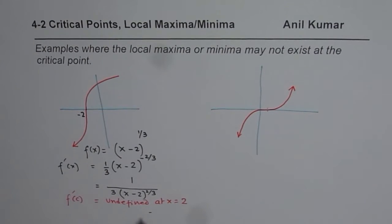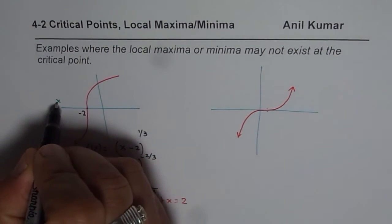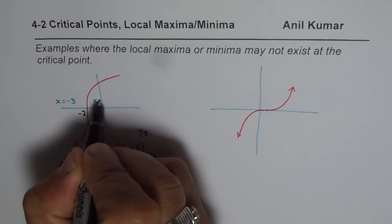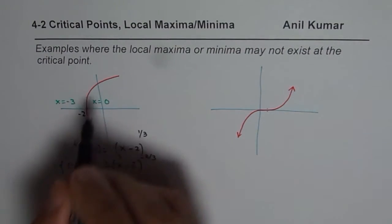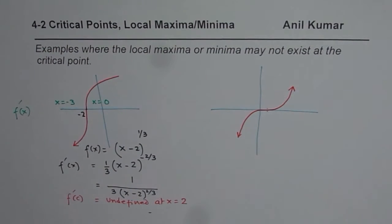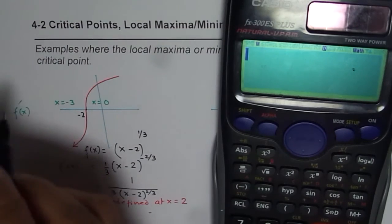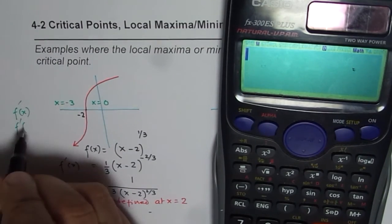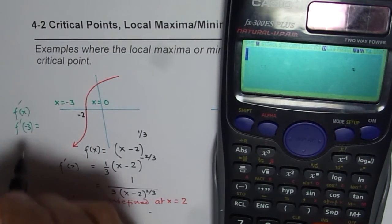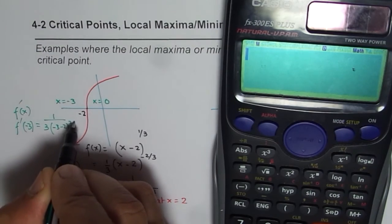Let us analyze the derivative on both sides of this function. Let me take a test point for this function: x = -3 on the left side, and x = 0 on the right side. How will the derivative be at these points — is the function increasing or decreasing? If I substitute x = -3, I get f'(-3) = 1 over 3 times (-3 - 2)^(2/3). This is going to be positive.